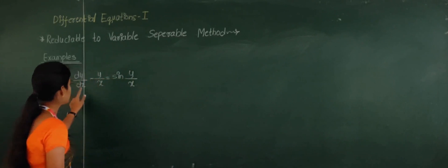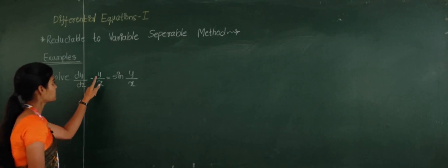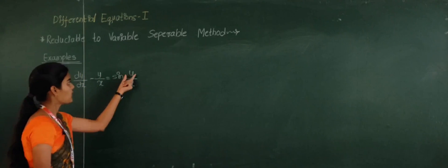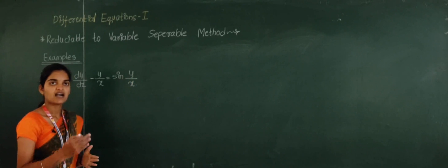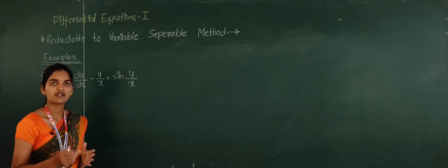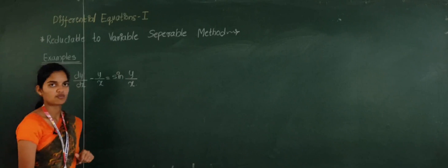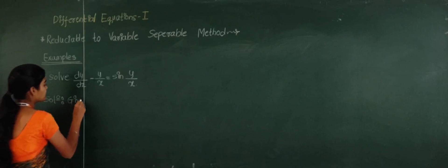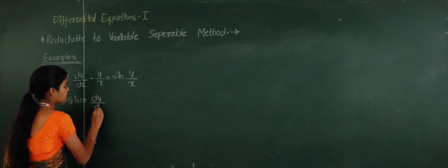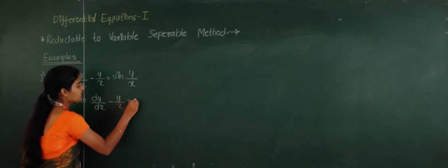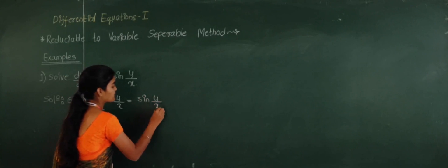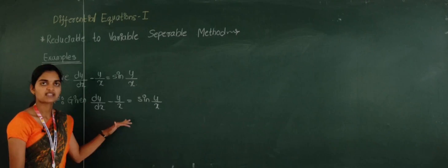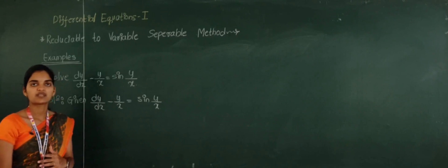Our given differential equation is dy/dx minus y/x is equal to sin(y/x). We will take y/x as T and find the corresponding dy/dx value. We cannot separate the variables directly in this equation, so this example is taken under the reducible to variable separable method.